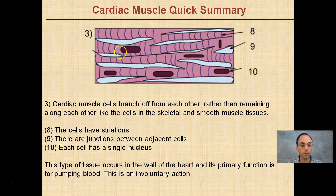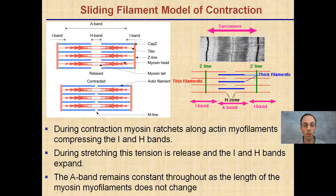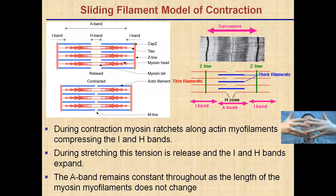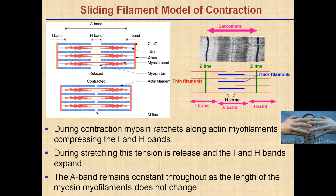Now for the sliding filament model of contraction — I have another video that goes into more detail, but here is the basic overview. During contraction, myosin ratchets along actin filaments, compressing the I and H bands. Neither the actin nor myosin filaments themselves change in length; what happens is they slide. When we have a contraction, the Z lines are pulled closer to one another.